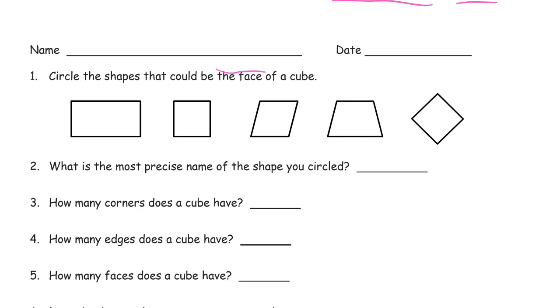For a cube, all the faces have to be flat and they have to be squares. All of them have to be squares. They can't just be rectangles like this guy, so he can't be.